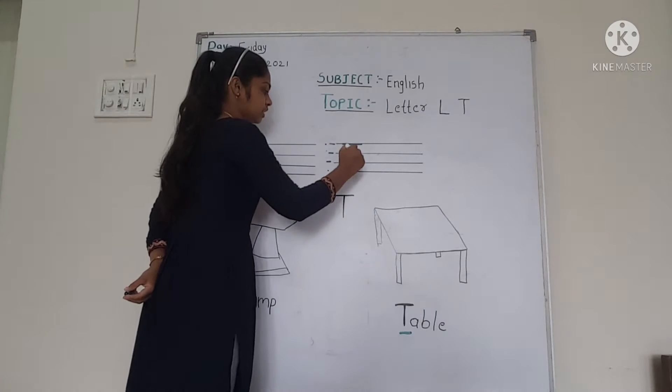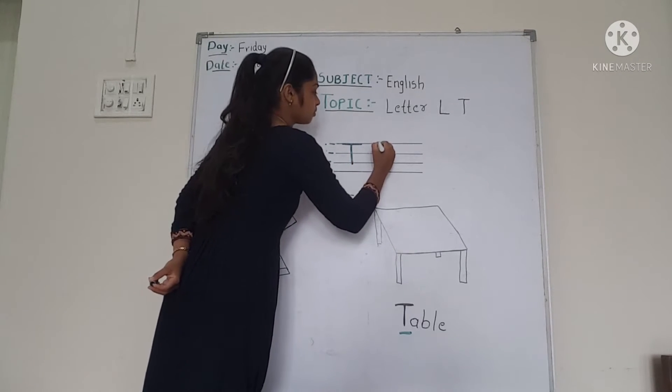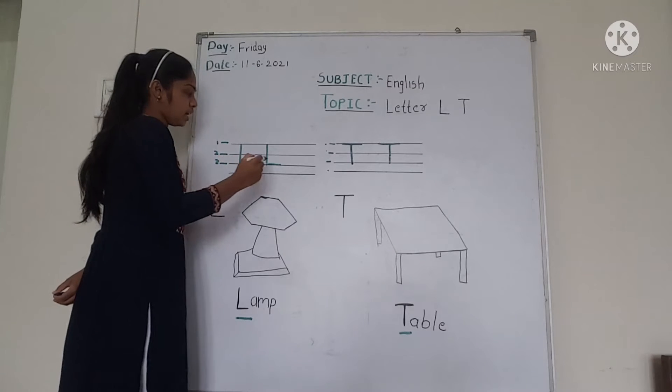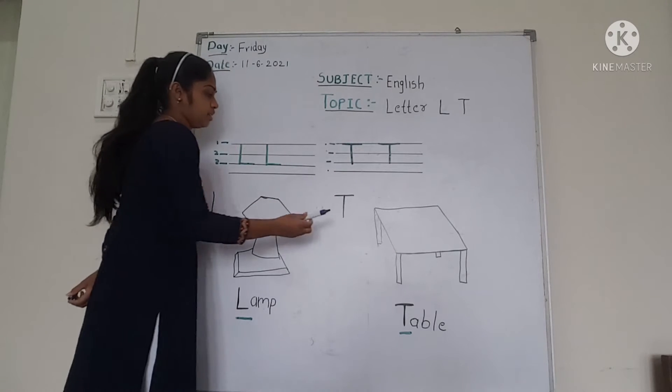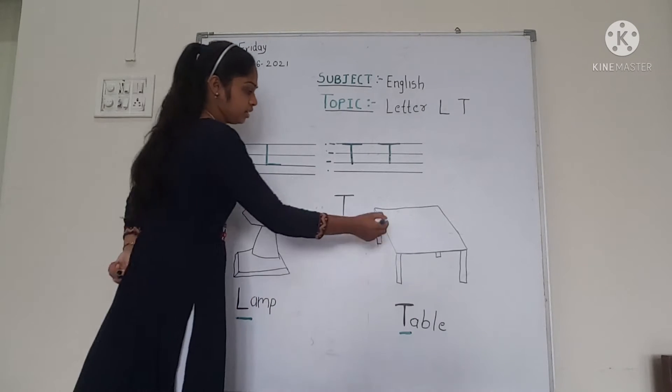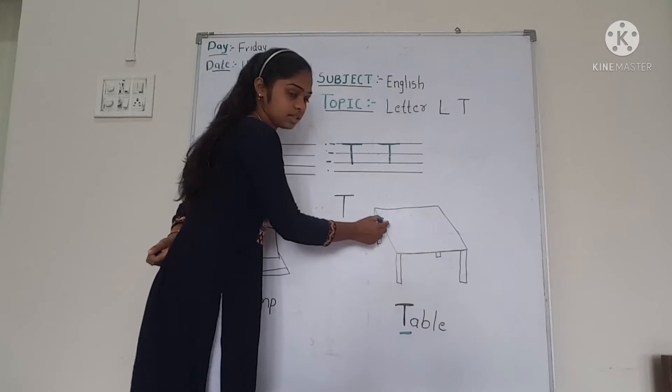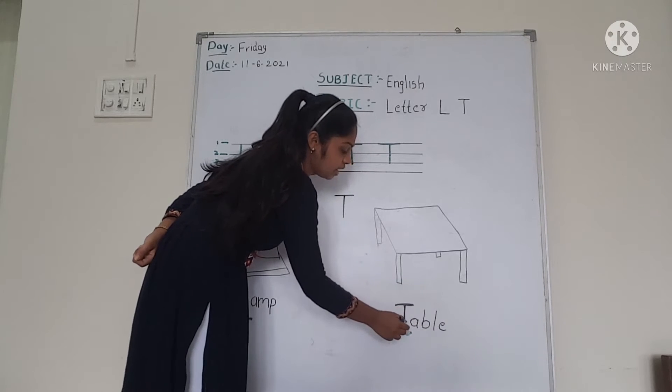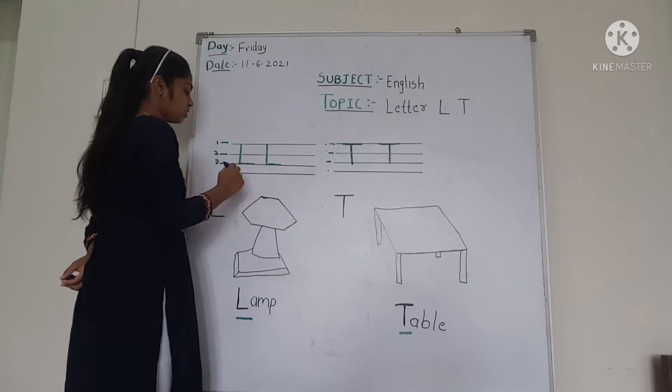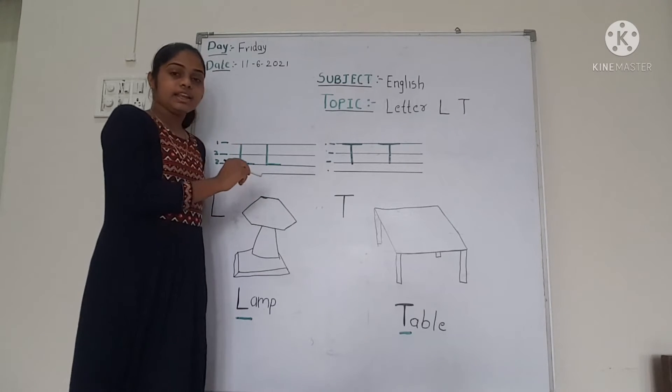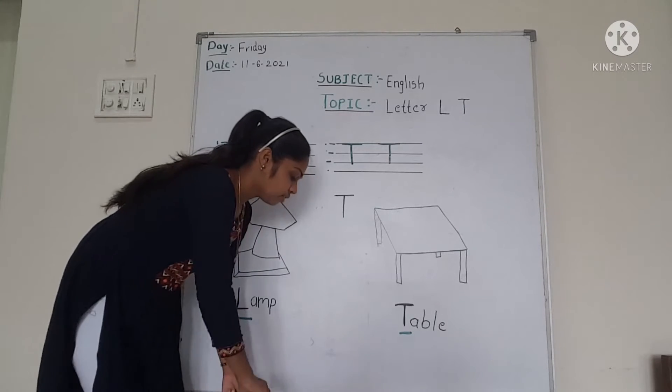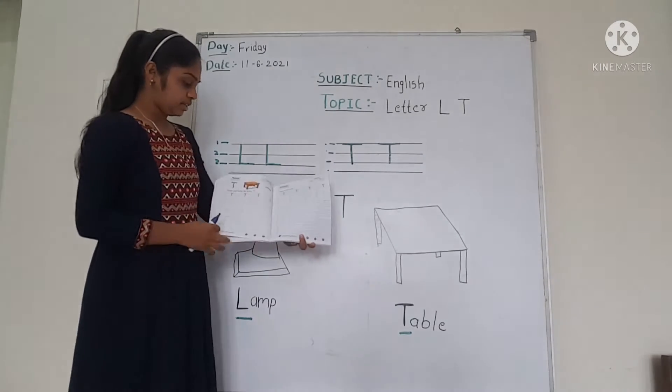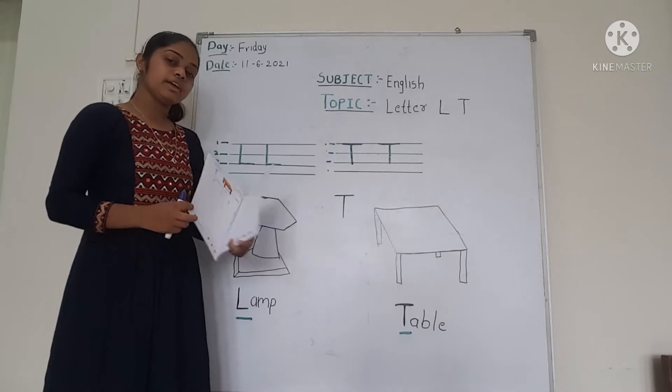First draw sleeping line and second is standing line. So let's look, I'll make letter T. Can you see? Letter L and letter T. So it's T for table. Can you see the picture? This is table. T-A-B-L-E, table. This letter uses standing line and sleeping line.